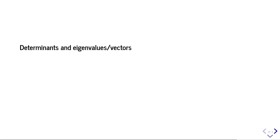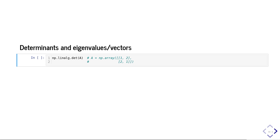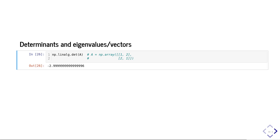You can also compute determinants and eigenvalues or eigenvectors. For the 2 by 2 matrix A = [[1, 2], [2, 1]], the determinant should be 1×1 − 2×2 = −3. You compute it using np.linalg.det(A). NumPy uses a numerical algorithm so it gives a decimal approximation, but we get essentially −3 as expected.